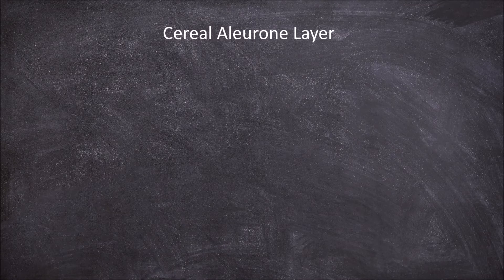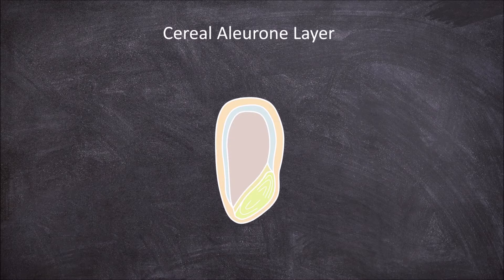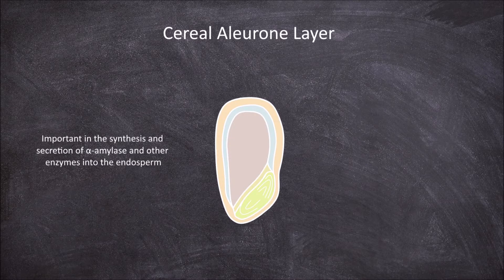In this video we're going to take a look at the cereal aleurone layer. The cereal aleurone layer is important in cereal grains in the synthesis and secretion of alpha amylase and other enzymes into the endosperm to break down starches to be used in the growing plant embryo.